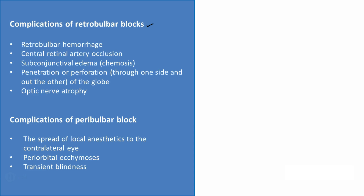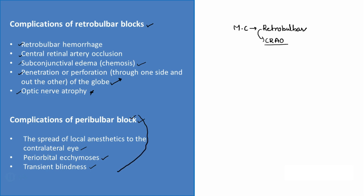The complications list is vast for the retrobulbar block. The most common complication is retrobulbar hemorrhage, followed by CRAO — central retinal artery occlusion. Others include subconjunctival edema, globe perforation, and damage to the optic nerve leading to optic nerve atrophy. For peribulbar block, complications include spread of local anesthetic to the contralateral eye, peri-orbital ecchymosis, and transient blindness — but the overall complication rate is less.